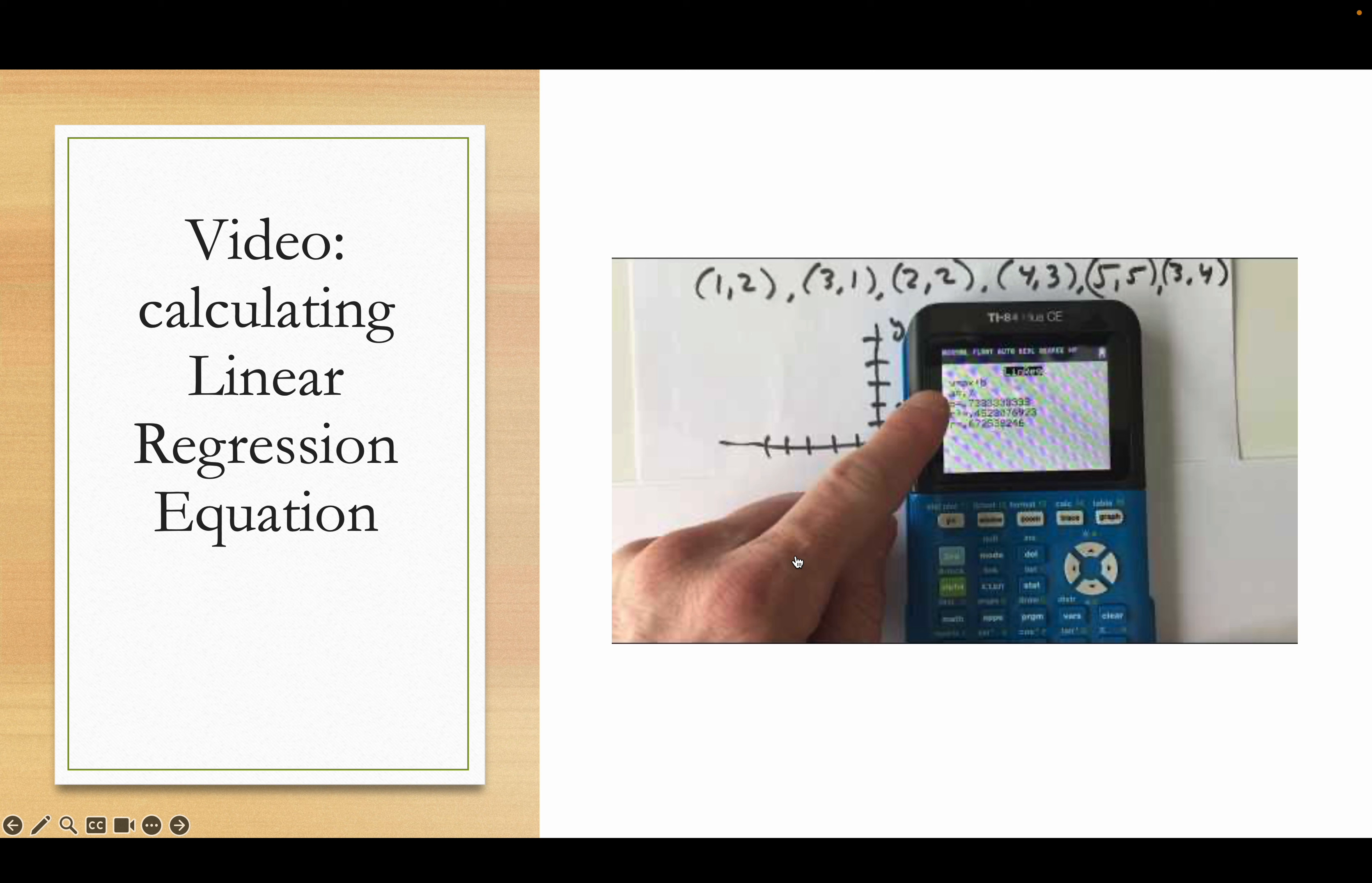Then underneath that there's an r squared value and an r value. You want the r value. The r value is the correlation coefficient, they often ask for it.